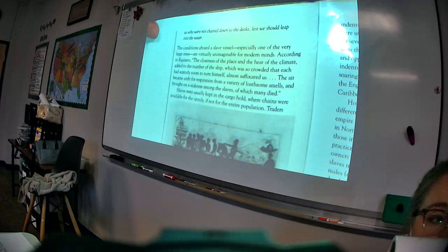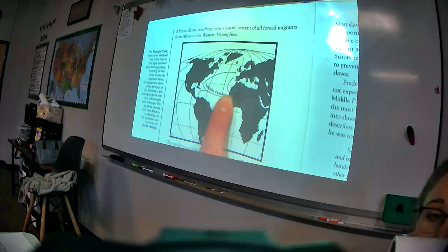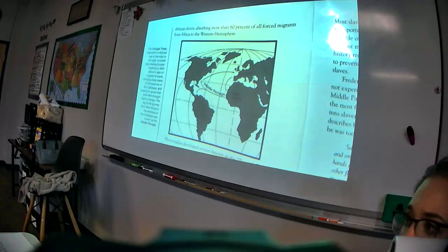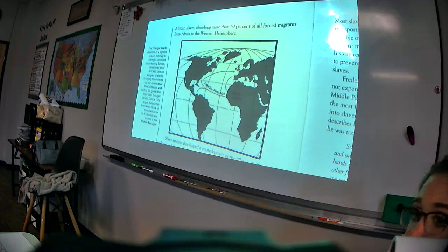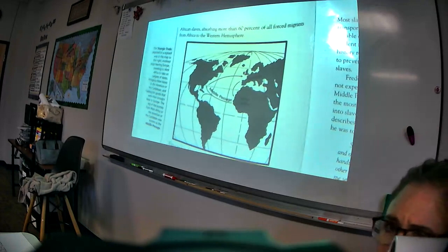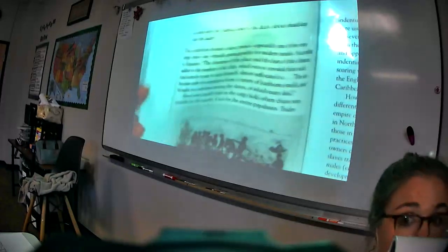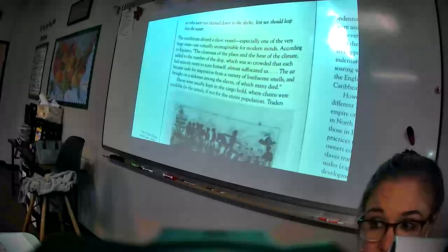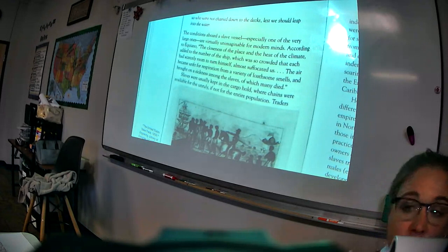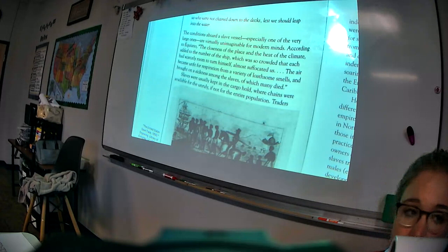Now, listen to what else he writes. This is Equiano, the guy who actually sailed on the boat as a slave. Soon, to my grief, two of the white men offered me eatables, and on my refusing to eat them, one of them held me fast by the hands and laid me across the windlass and tied my feet, while the other flogged me severely, meaning whipped. So, one person held him down while the other guy whipped him. I had never experienced anything of this kind before. If I could have gotten over the nettings, meaning if I could have jumped overboard, I would have jumped over the side, but I could not. The crew used to watch very closely those of us who were not chained down to the decks, lest we should leap into the water. Now, here's the thing. If you're a slave trader, all the slaves you pick up in Africa, you want to get to America so you can sell and make money, right?